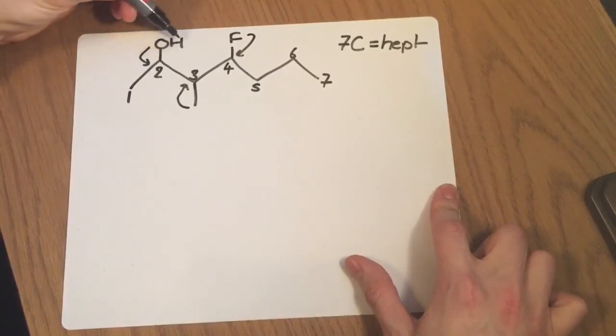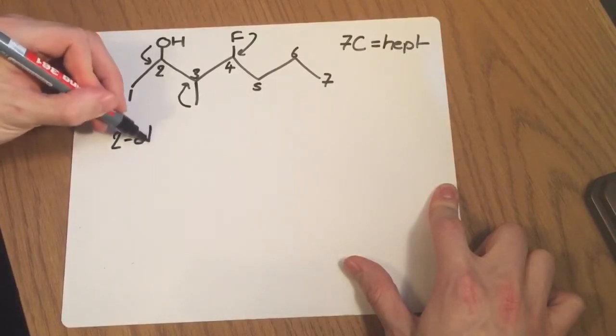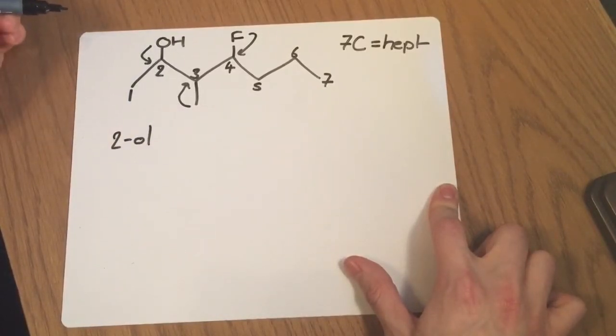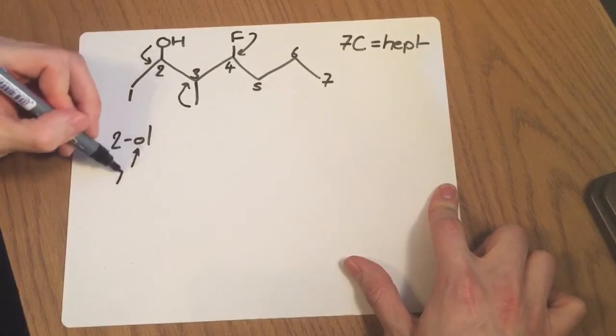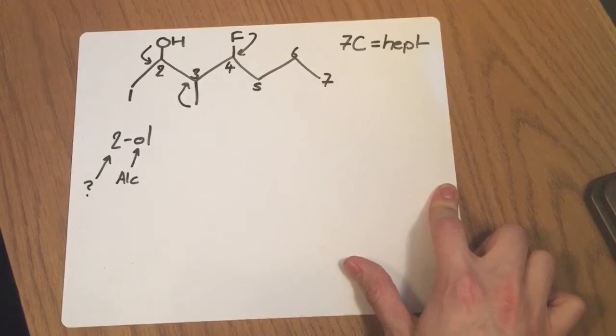I've got here at carbon two, I've got an alcohol group. Now this is going to be 2-ol as part of the name structure. The ol tells me that it's an alcohol and the two number tells me whereabouts on the carbon chain that functional group particularly is.